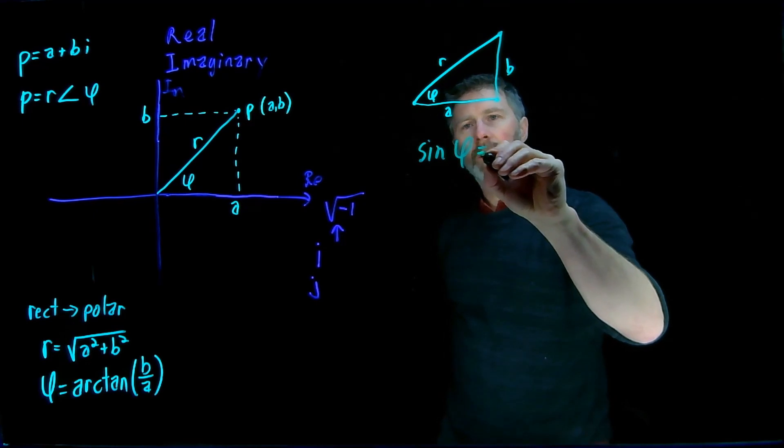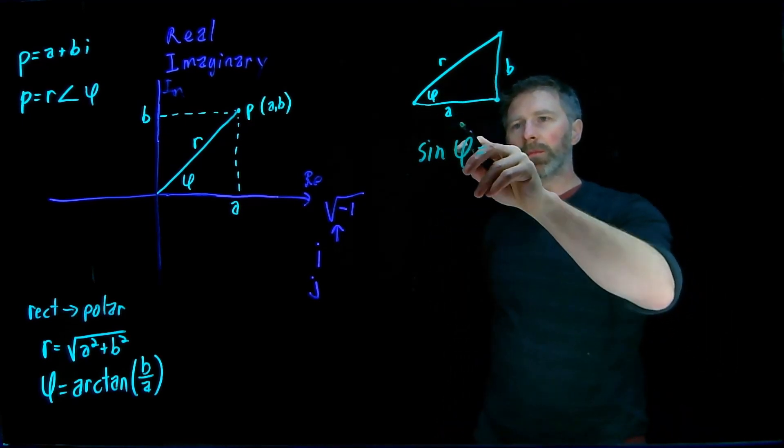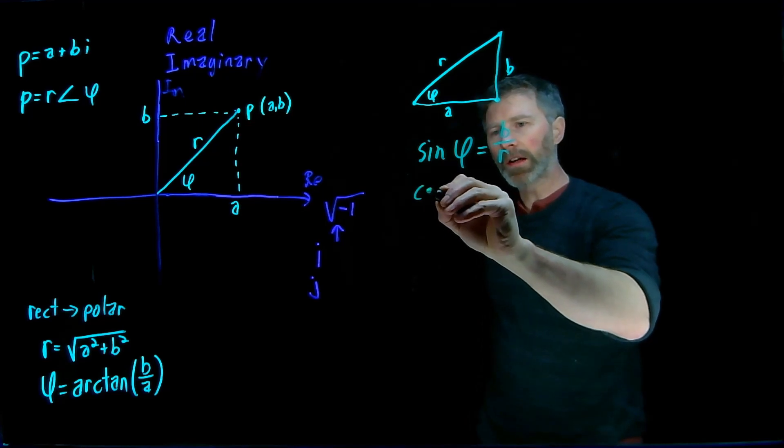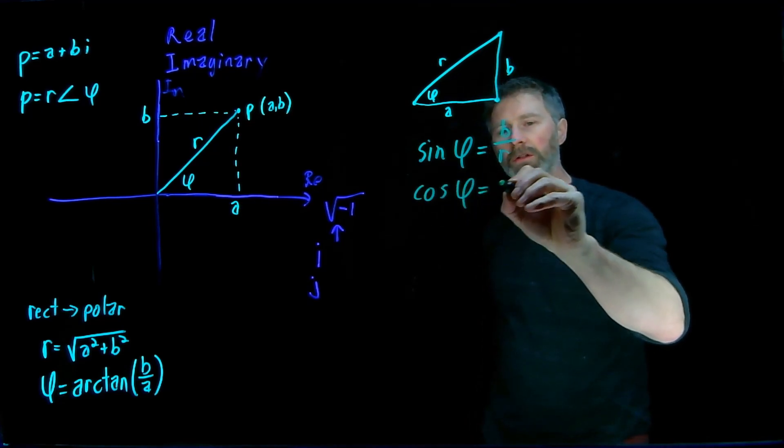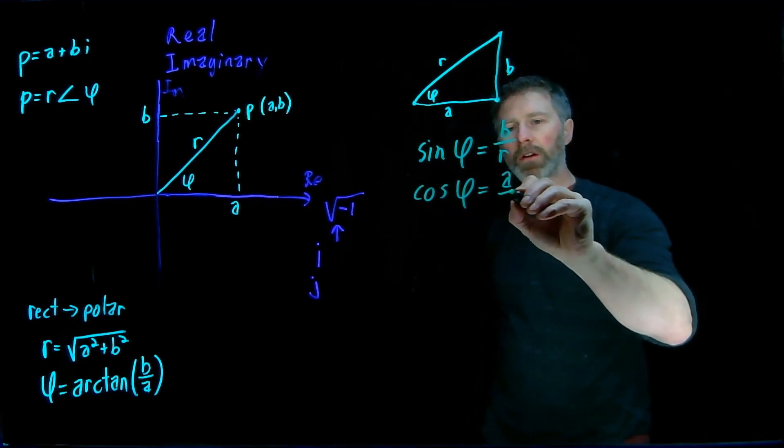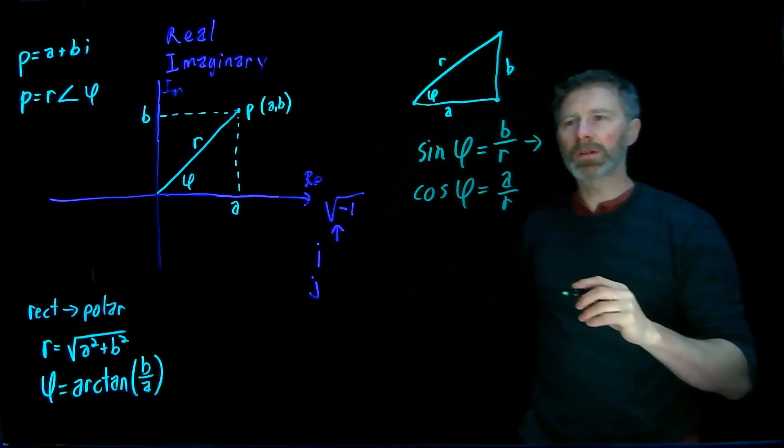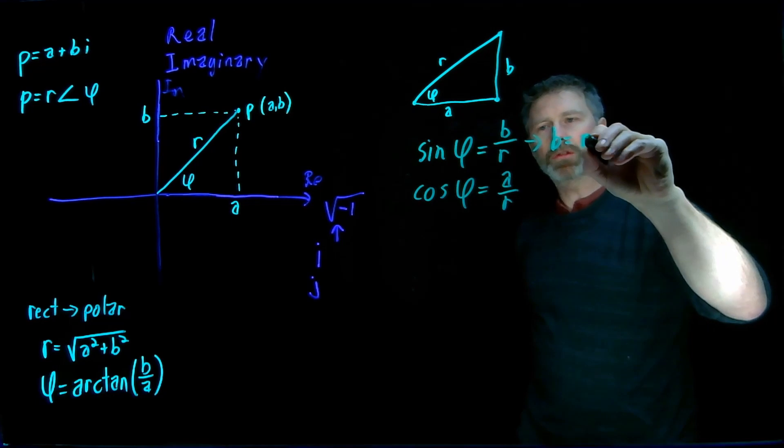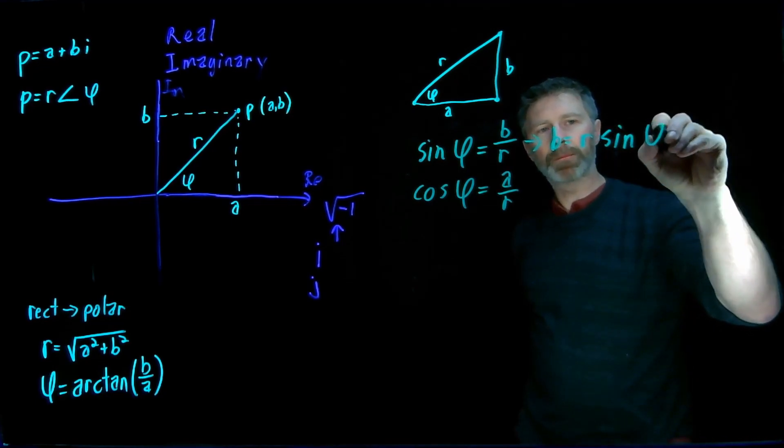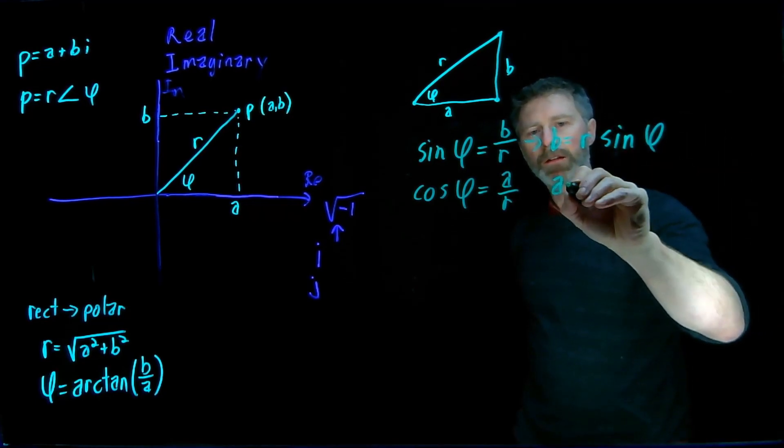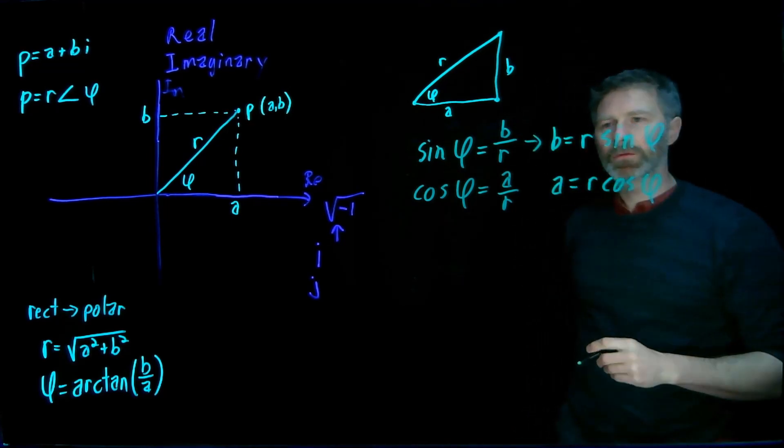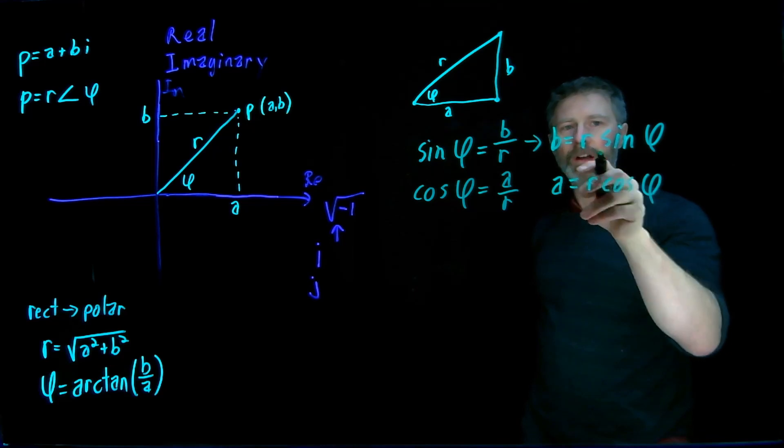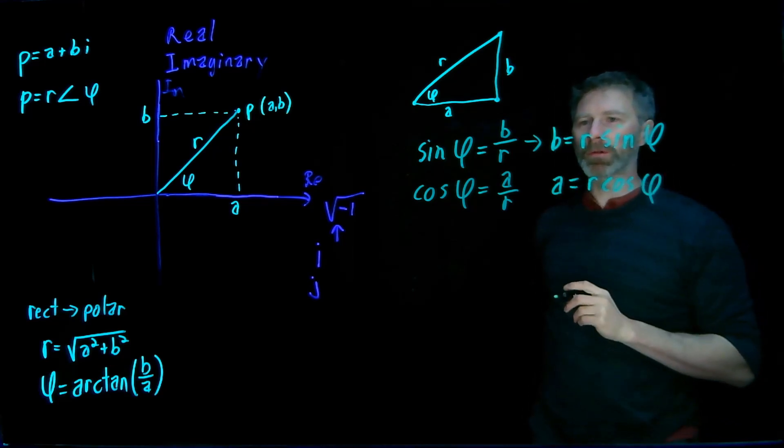Sine of phi, that's going to be equal to B over R. And the cosine of phi, well, that's going to be equal to A over R. So with just some simple rearranging here, we get B is equal to R sine phi, and A is equal to R cos phi. So that's the conversion. If I know the polar coordinates, if I know the R and the phi, then I can do a really simple conversion.